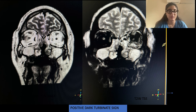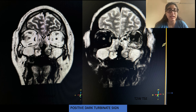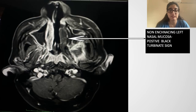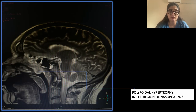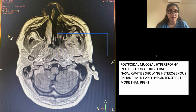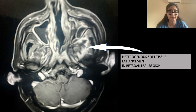There was a positive black turbinate sign in the middle turbinate. The black turbinate sign refers to ischemia and non-enhancement of the turbinates, and the middle turbinate is the most commonly involved. These are coronal images of post-contrast MRI. An axial image shows non-enhancing left nasal mucosa, which again indicates the positive black turbinate sign. There is polypoidal mucosal hypertrophy in the nasopharynx, and polypoidal mucosal hypertrophy in the region of bilateral nasal sinuses with heterogeneous enhancement and hypointensities on the left more than the right.